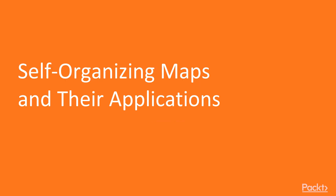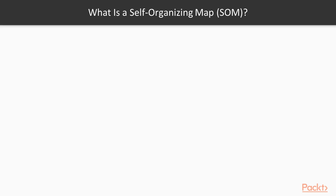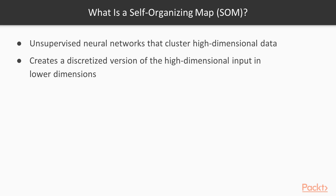In this video, we are going to explain what SOMs are and how they really work. So let's explore more about this specific type of dimensionality reduction algorithm. The self-organizing maps are unsupervised neural networks that cluster high-dimensional data. The SOM creates a discretized version of the high-dimensional data in lower dimensions, which is usually two dimensions.